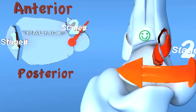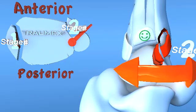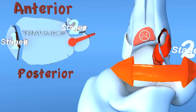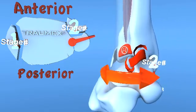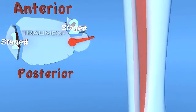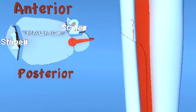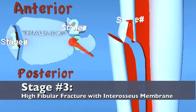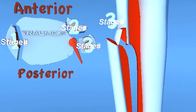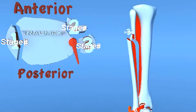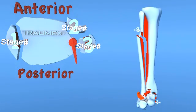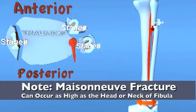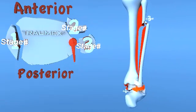As the forces continue past stage 2, rupture of the interosseous membrane begins to occur distally at the level of the ankle joint. The exit point of this rupture creates a stage 3 injury, described as a high, short oblique fracture of the fibula beginning above the level of the syndesmosis. This fracture can be at various levels of the fibula. The most proximal fracture pattern occurs at the head and neck of the fibula, which is described as a Maisonneuve fracture.